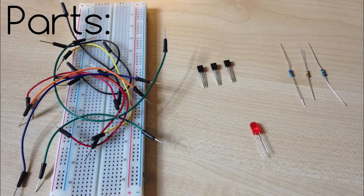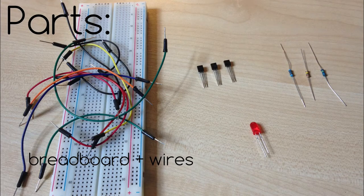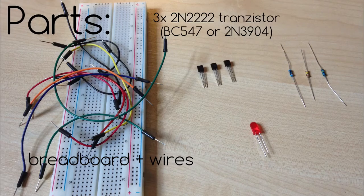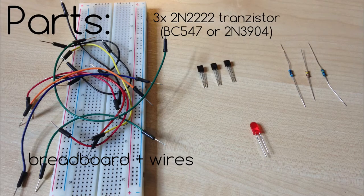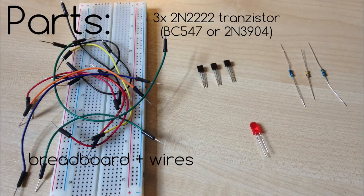Parts are the following: breadboard with some wires or PCB, three 2N2222 transistors. You can also try BC547 or 2N3904.